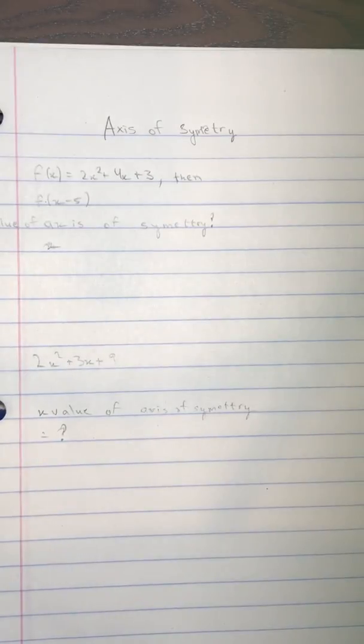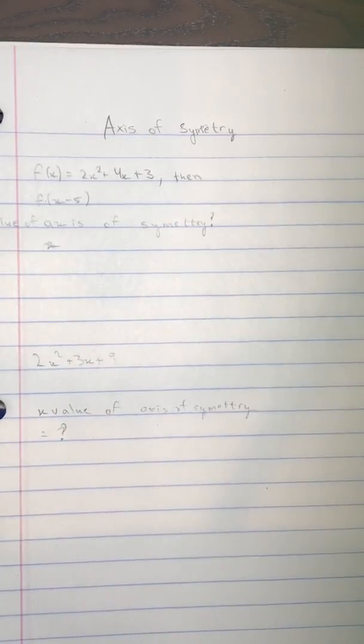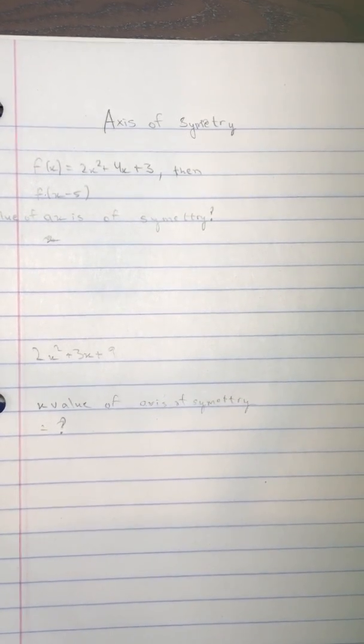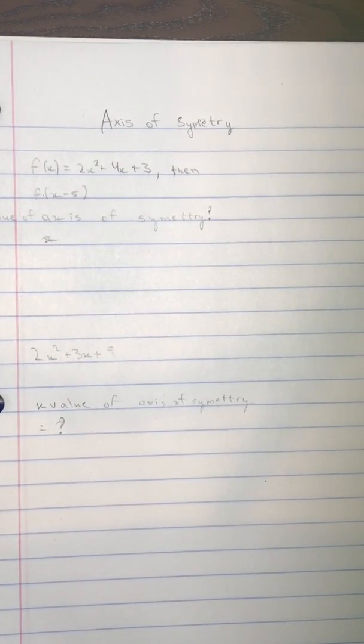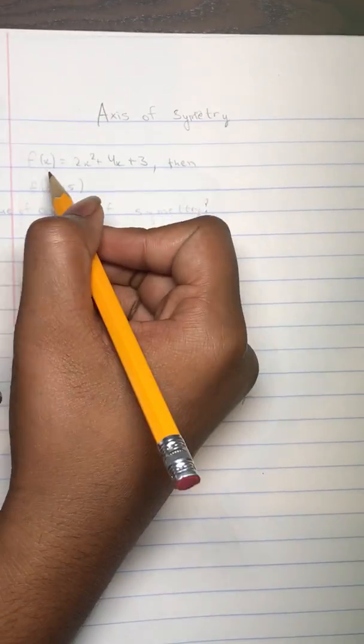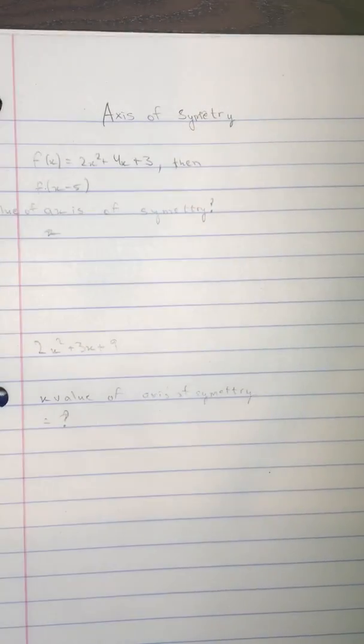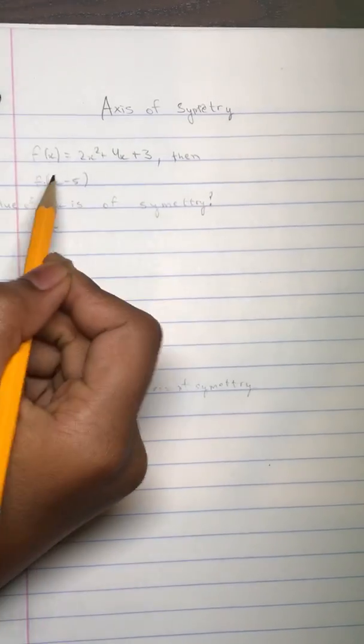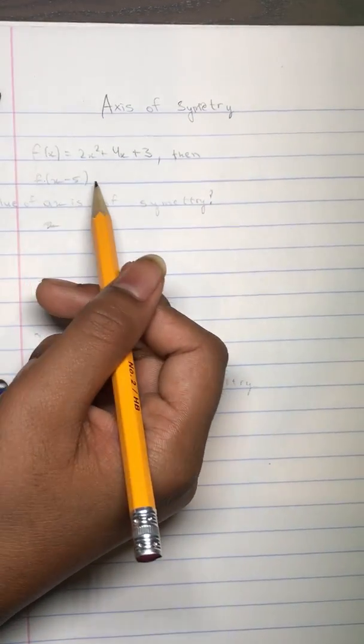A question that they ask frequently on number sense between questions number 71 to 80 is what is the x value of the axis of symmetry. So let's dive in. Let's say we have a problem saying if f of x equals 2x squared plus 4x plus 3, and then f of x minus 5.